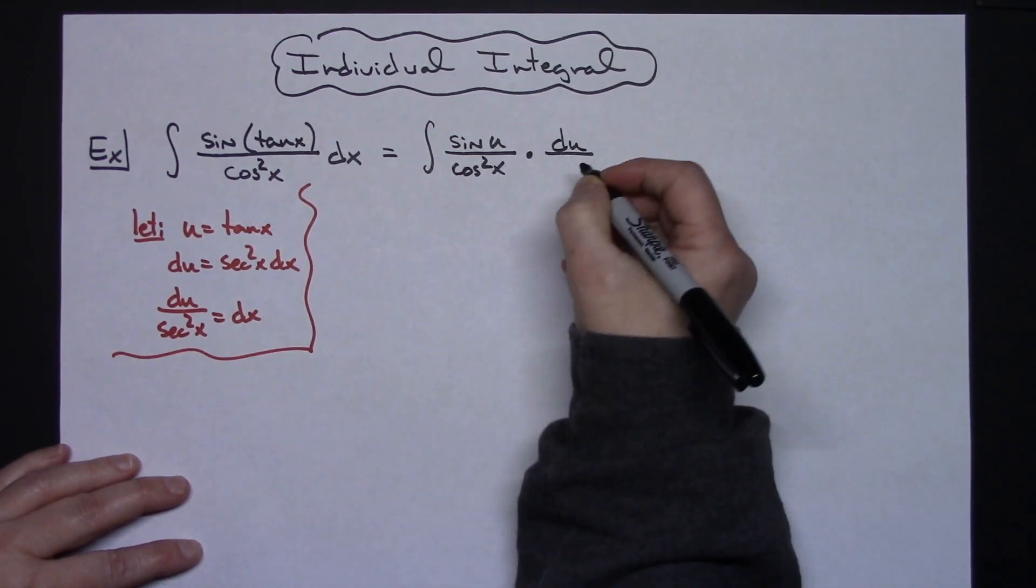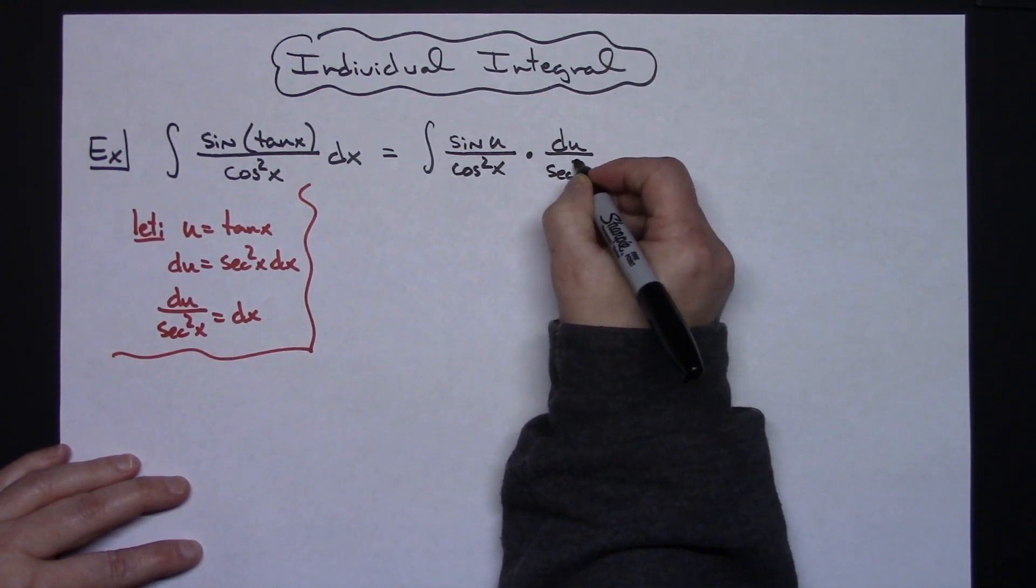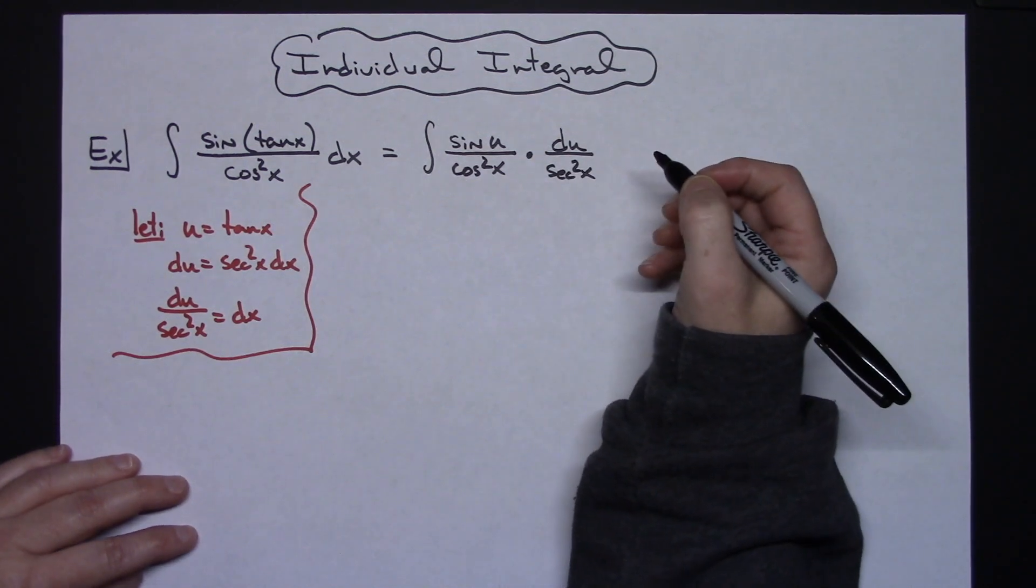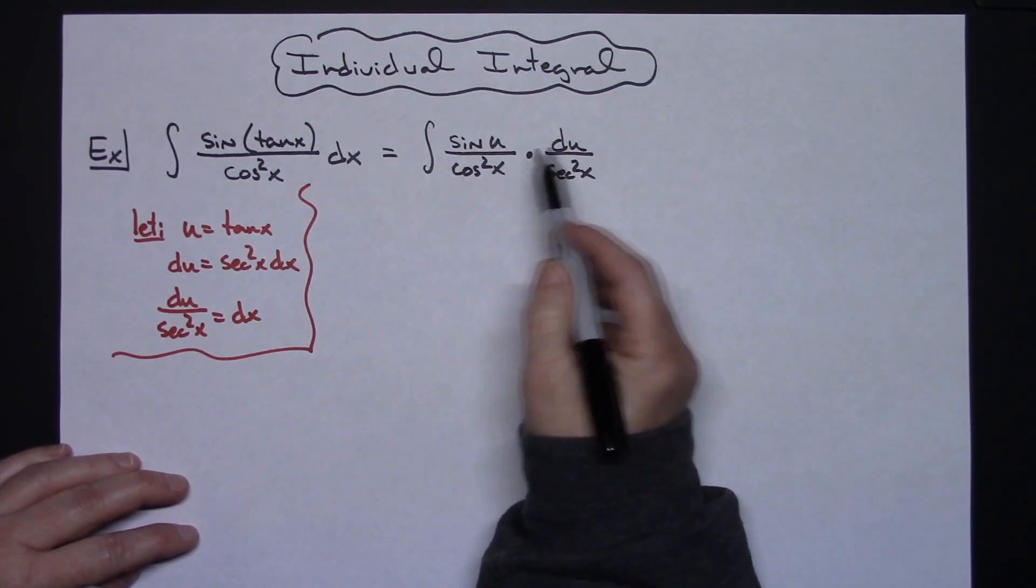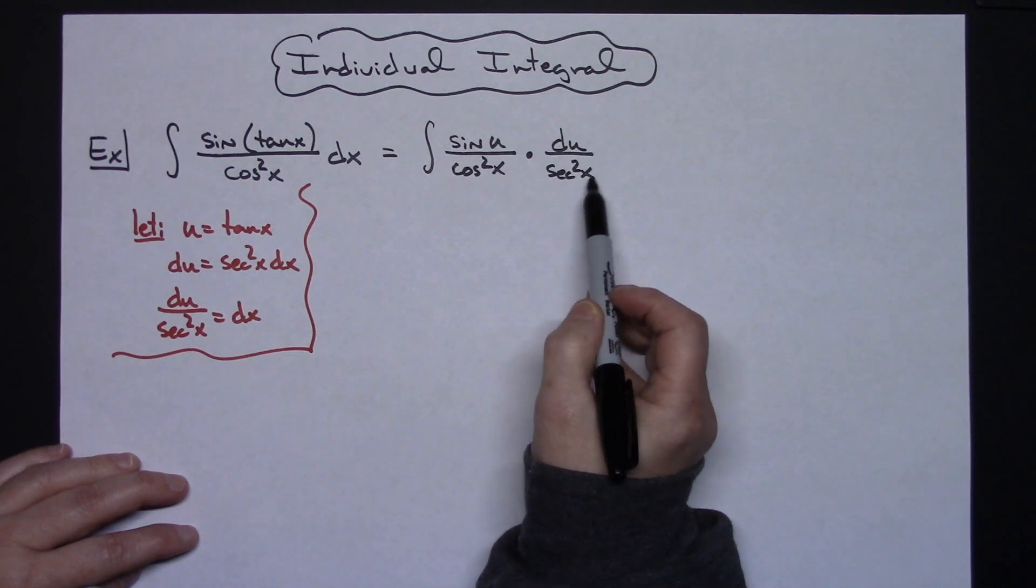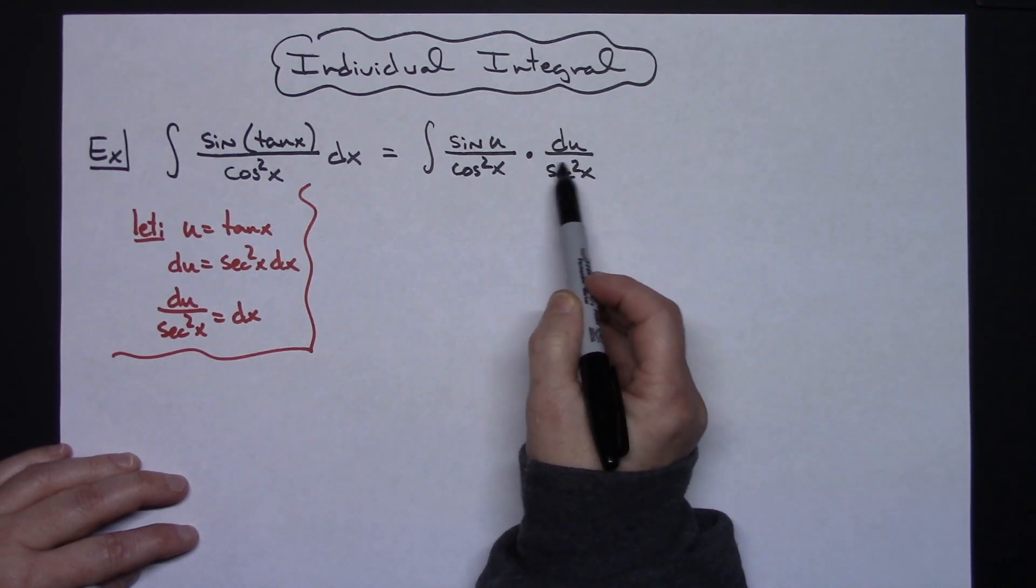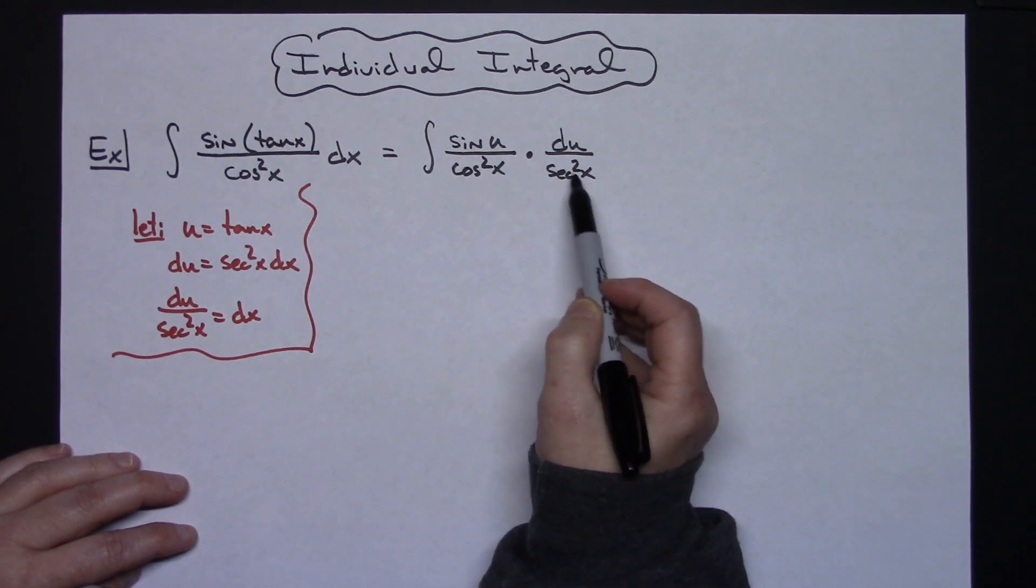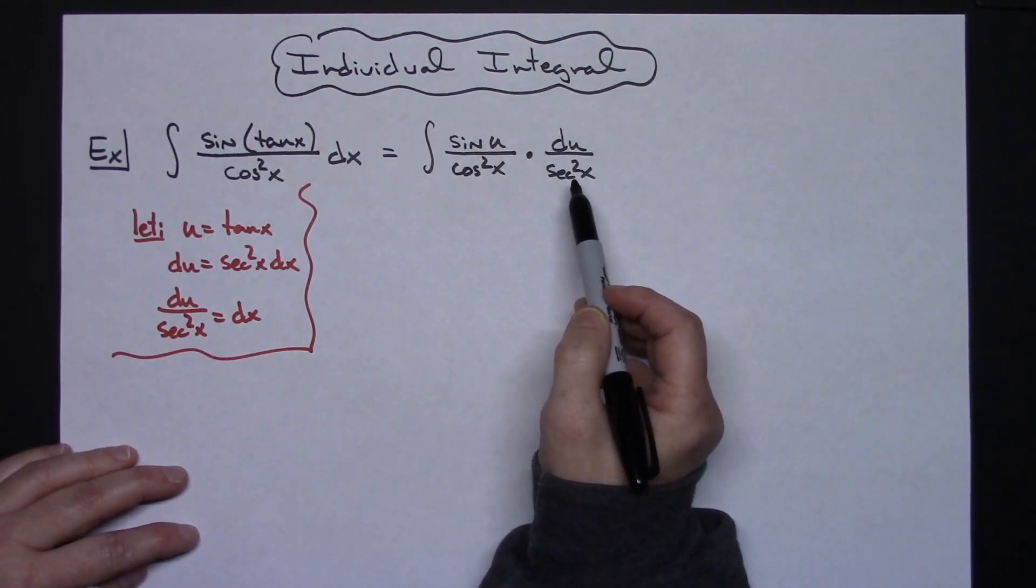Now at this point, nothing crosses out yet. However, I can take a look at that secant squared x, and I can do a reciprocal identity for that and substitute in a 1 over cosine squared x. I'm actually going to show that, even though it's going to look a little awkward.